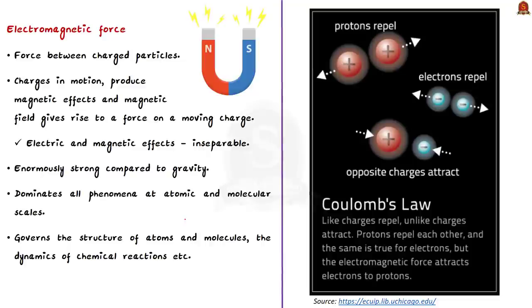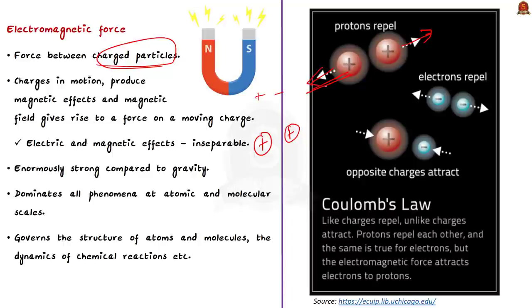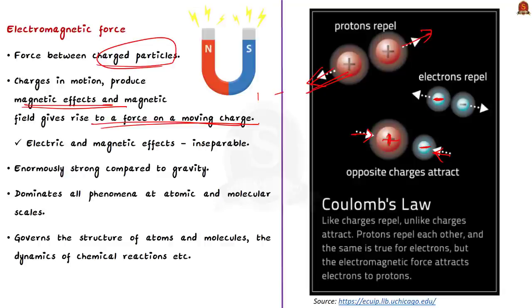Next is the electromagnetic force — the force between charged particles, specifically electric charge. Electric charge is the basic property of matter carried by some elementary particles and can be positive or negative. When charges are at rest, like charges are repulsive — two positively charged particles placed close together repel each other — whereas unlike charges, one positive and one negative, tend to attract each other. When these charges are in motion, the story is different because they produce magnetic effects, creating a magnetic field and giving rise to a force on a moving charge. Both electric and magnetic effects and their forces are inseparable in such a scenario — which is why this force is called electromagnetic force.